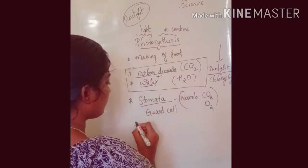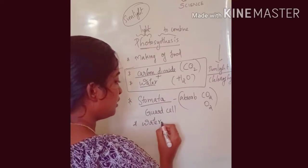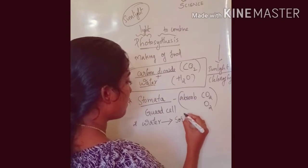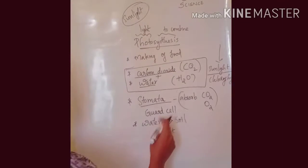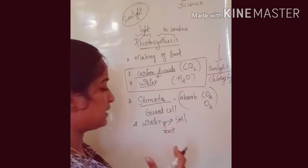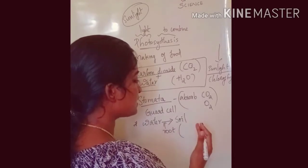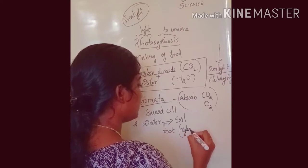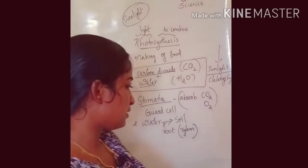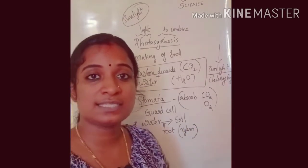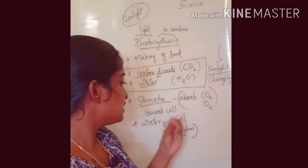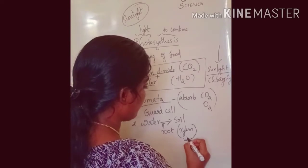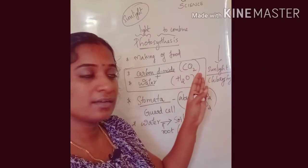Water reaches the leaves by being absorbed from the soil by the roots. From the root, water travels through a continuous vessel system known as the xylem vessel — which you will learn about in the coming chapter on transportation. The xylem vessel helps transport water into the leaves. Sunlight is absorbed by the chlorophyll present in the leaves; chlorophyll has a green pigment that helps absorb sunlight.